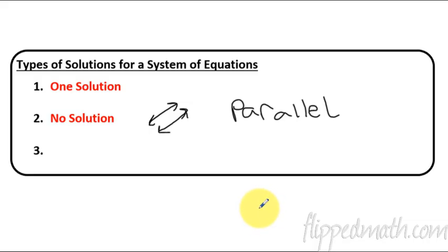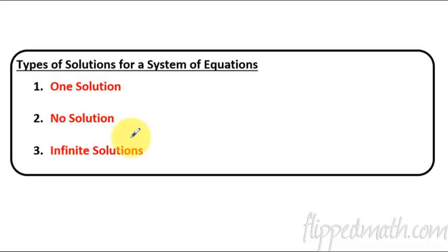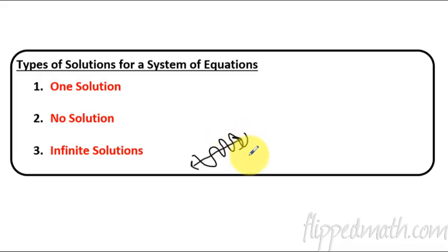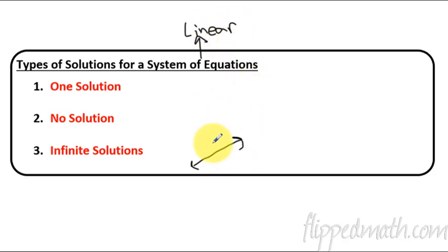And then the last thing is infinite solutions. How do you have a line like this and then have a line that's crossing it an infinite number of times? In our case, because we're dealing with linear equations — a system of linear equations — the other line is just the same exact line on top of it. So it's the situation where you have two different equations, but they represent the same line.